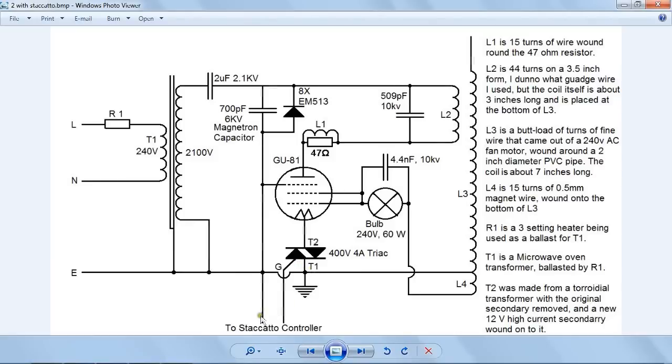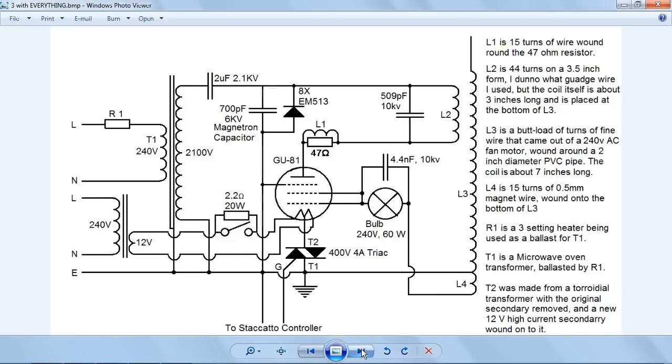We've got these two connections here going to the staccato controller. This one connects the gate of the triac to the staccato controller's output. This one simply connects to the staccato controller's ground. And there you go, it's that simple. If I was to include the supply for the filament, it would look pretty messy. You can still make out what's going on, but it's a lot easier like that.